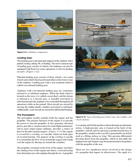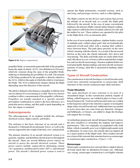There are two significant factors involved in the design of a propeller that impact its effectiveness. The angle of a propeller blade, as measured against the hub of the propeller, keeps the angle of attack, AOA, relatively constant along the span of the propeller blade, reducing or eliminating the possibility of a stall. The amount of lift being produced by the propeller is directly related to the AOA, which is the angle at which the relative wind meets the blade. The AOA continuously changes during flight depending upon the direction of the aircraft. The pitch is defined as the distance a propeller would travel in one revolution if it were turning in a solid. These two factors combine to allow a measurement of the propeller's efficiency.